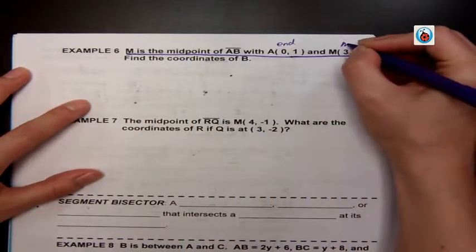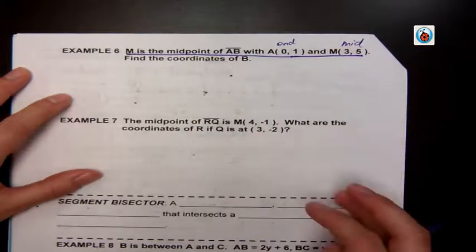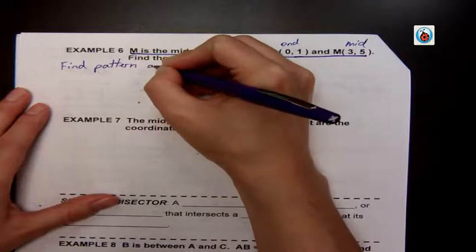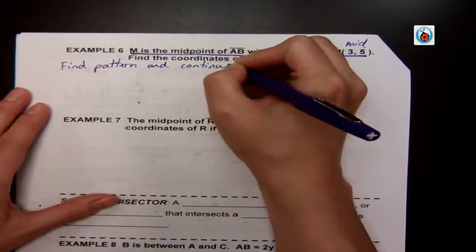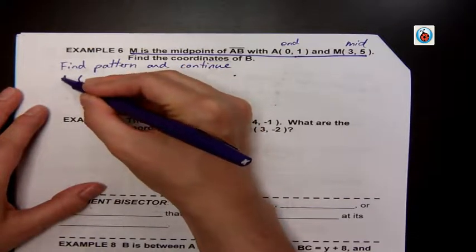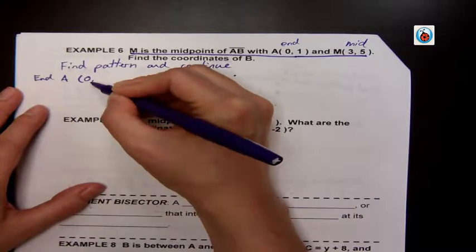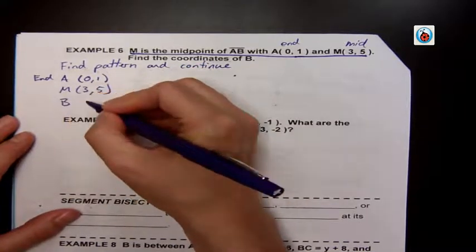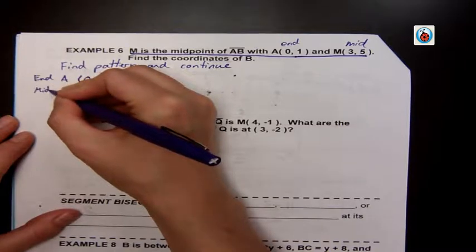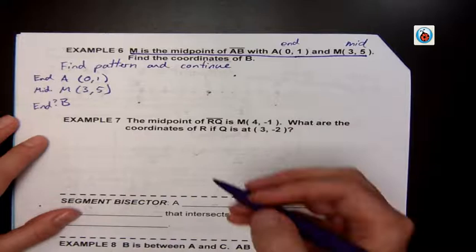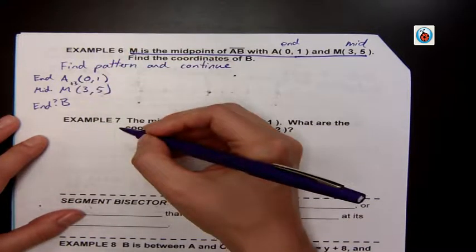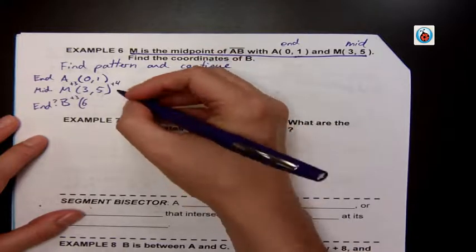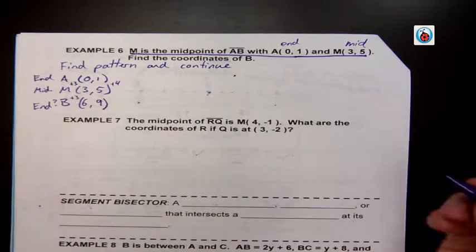So endpoint, midpoint—we're trying to find B. We can do two ways: you can find the pattern and continue. If I do it this way, my coordinates are A, which is (0, 1). My midpoint is (3, 5), and I'm trying to find what B is. So I see the pattern: 0 to 3, we added 3 there, so if I add another 3 I get 6. 1 to 5, I added 4 there, so I add another 4 and get 9. It's a really simple way.